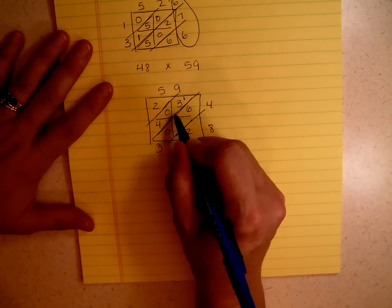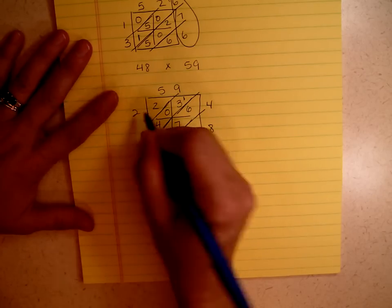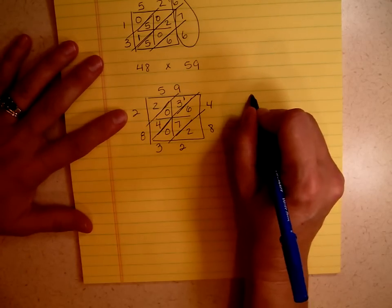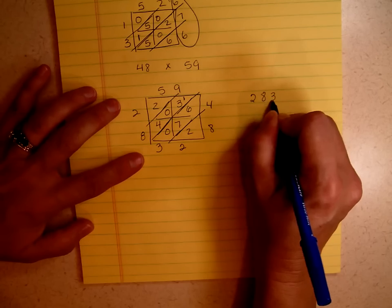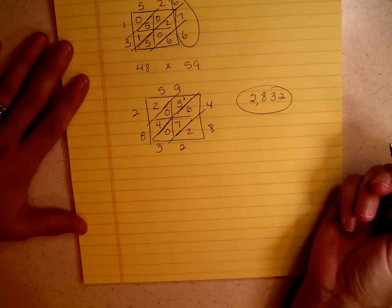So now I have 4 plus 3 is 7, and 1 more is 8. And then that number is 2. So now I'm going to write the numbers in order. I have 2, 8, 3, 2. So my answer is 2,832.